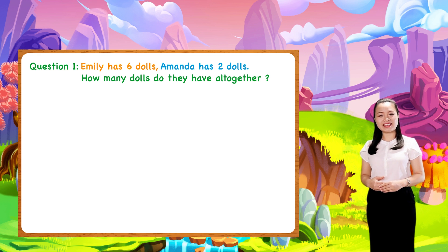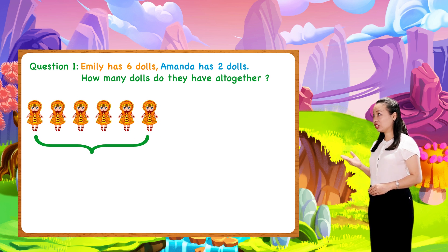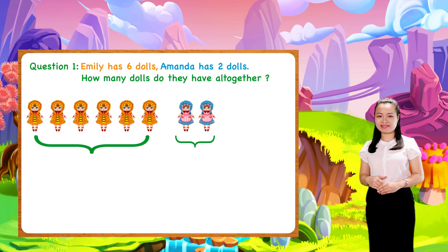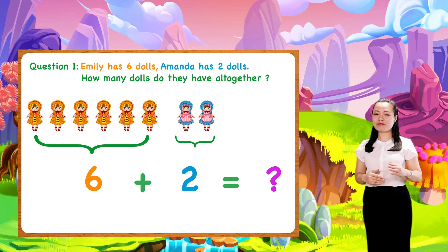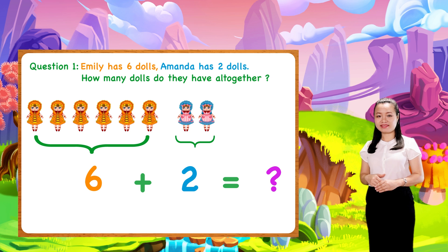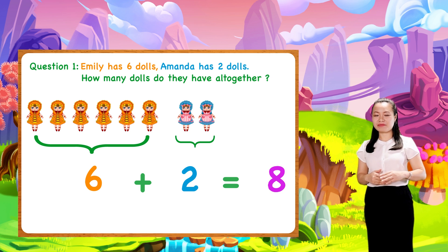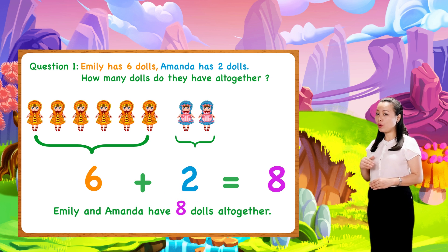Let's find the answer together. Emily has six dolls. Amanda has two dolls. We add six and two to find the number of dolls they have all together. So, six plus two equals eight. We conclude: Emily and Amanda have eight dolls all together.